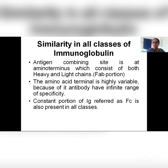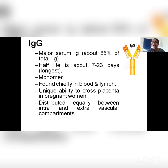This is important because it gives rise to different ratios of kappa and lambda, which give rise to different immunodeficiency diseases. There are some similarities in all classes of immunoglobulin: antigen combining capacity is at the amino terminus in all types — that is the FAB portion. This amino terminus is highly variable, and because of it the antibody has infinite range of specificity — it can combine with infinite epitopes of antigens. The constant portion of every class is referred to as FC, and this constant portion is present in all classes of immunoglobulins.